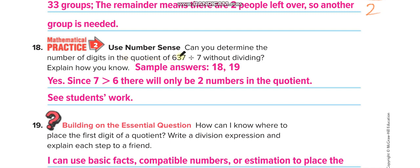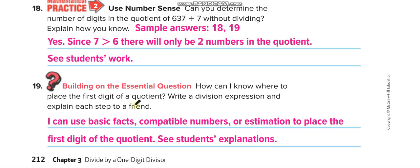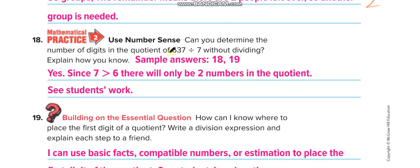Can you determine the number of digits in the quotient for 637 divided by 7? Of course, the first number is less than the divisor, so you'll just get 2 numbers in the quotient. How can I know where to place the first digit of a quotient? I can use basic facts, compatible numbers, or estimation to place the first digit of the quotient. Like here, the first number is less than the divisor, so I will place the quotient above the second digit because we divide 2 digits together.